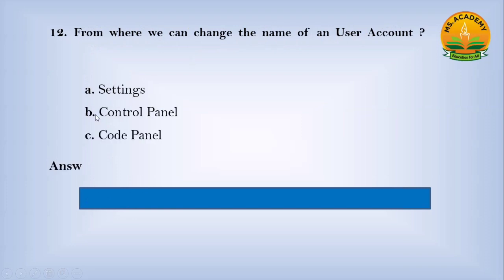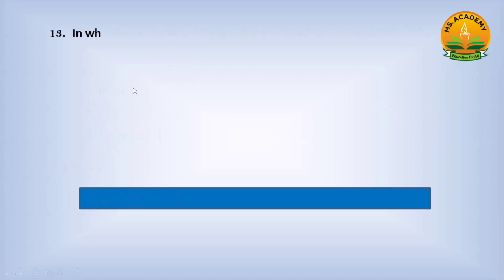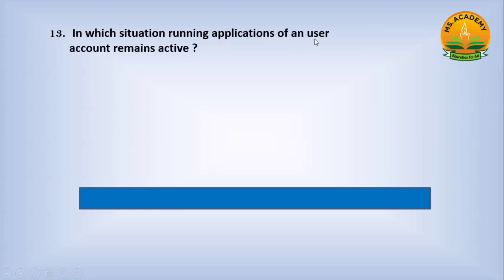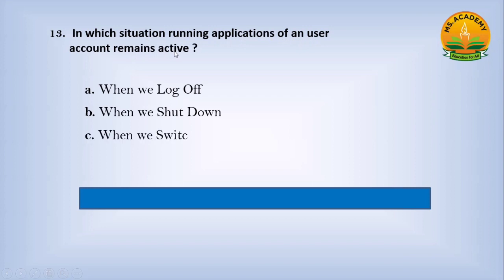From where can we change the name of a user account? Option A: Settings, option B: Control Panel, option C: Code Panel. Answer: B — Control Panel. In which situation do running applications of a user account remain active? Option A: when we log off, option B: when we shut down, option C: when we switch user. Answer: C — when we switch user.